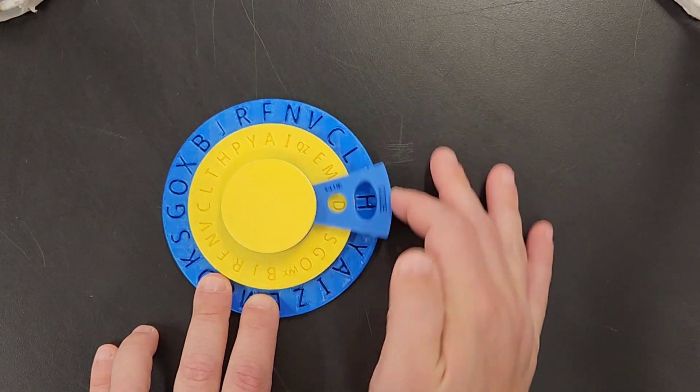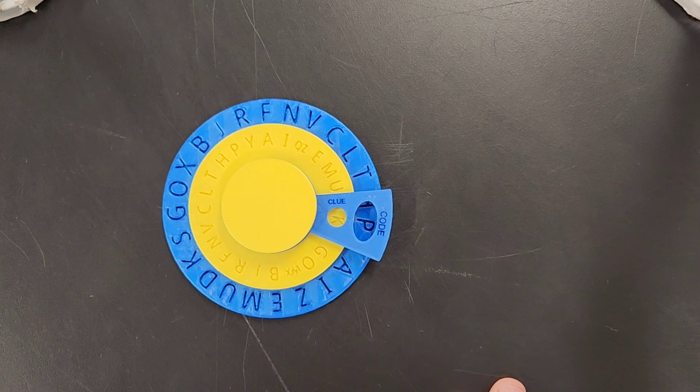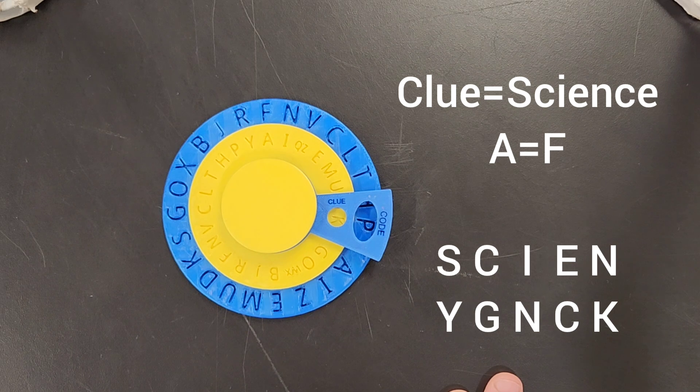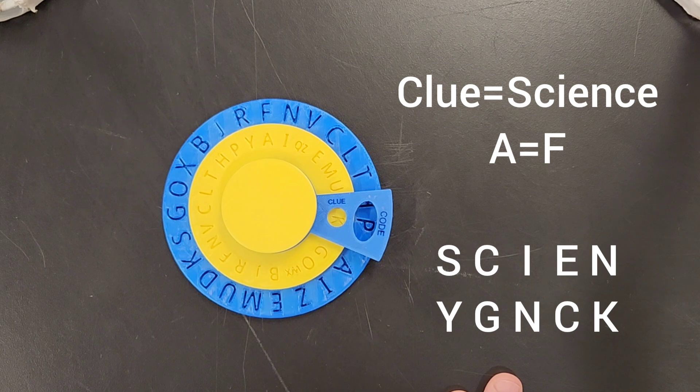So you're going to get some sort of clue, and the clue is an English word. And it can be anything that's at least five letters long to open up the codex, because there's five rows on the codex. So let's say the clue is, what's your favorite class? Well, your favorite class should definitely be science. So we're going to put in science.